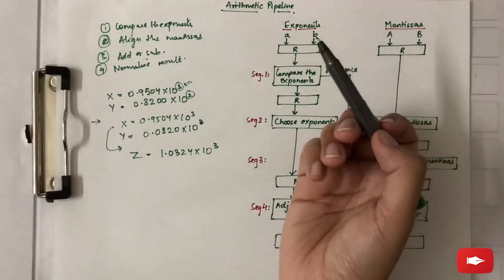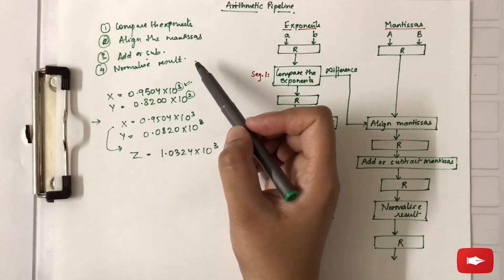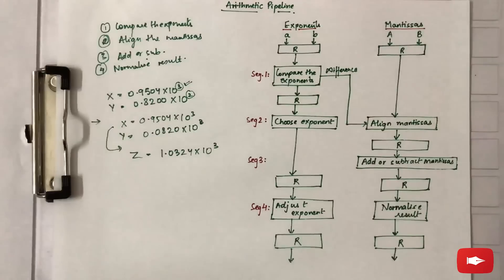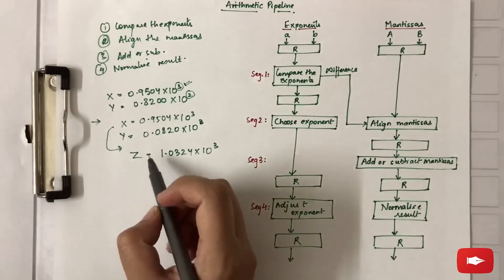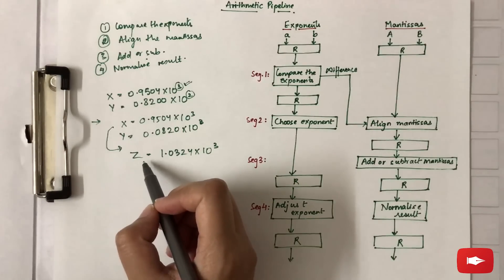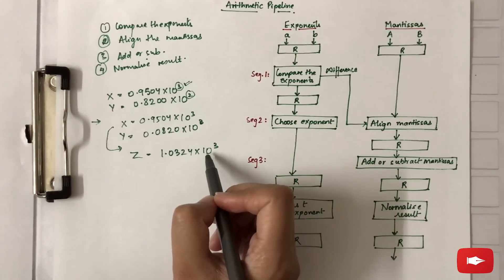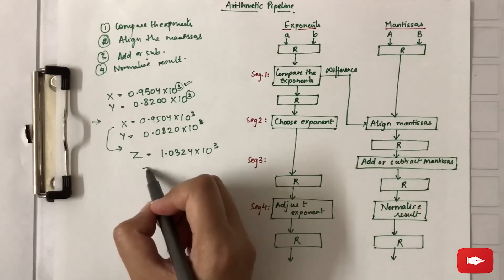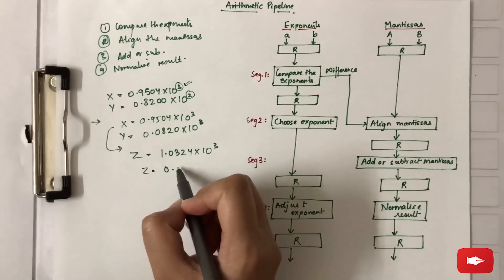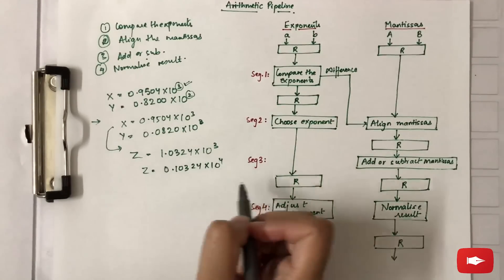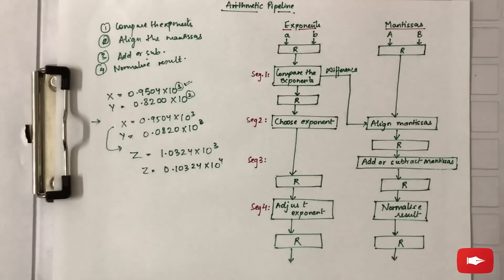What is normalization? Normalization is basically done so as to have a fraction with a non-zero first digit. After normalization, shifting the mantissa to the right and incrementing the exponent by 1, we get Z = 0.10324 × 10⁴. This is the answer.